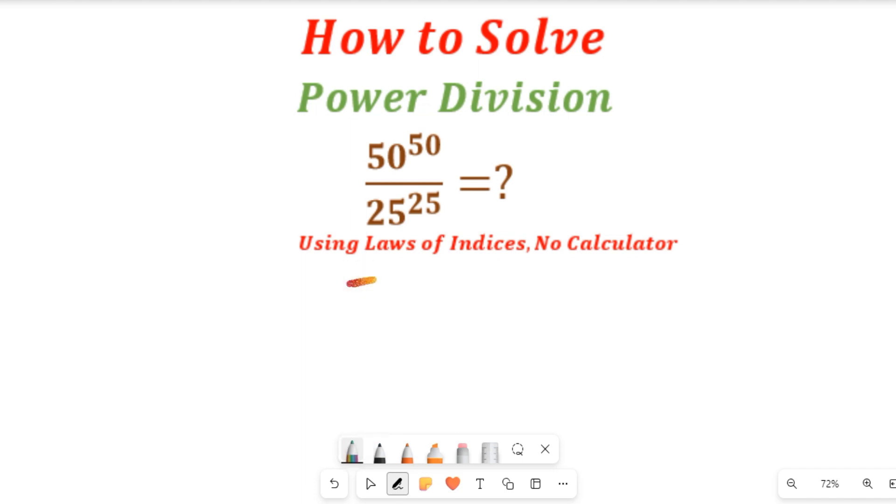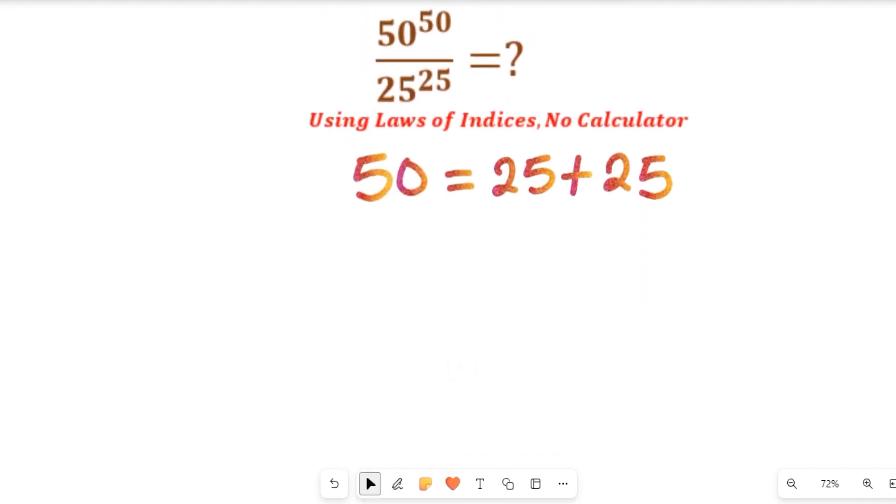From there you can come to see that 50 can simply be equal to 25 plus 25. So that simply tells us that we can change the powers of the numerator value by 25 plus 25. That way we will make it easy to simplify.